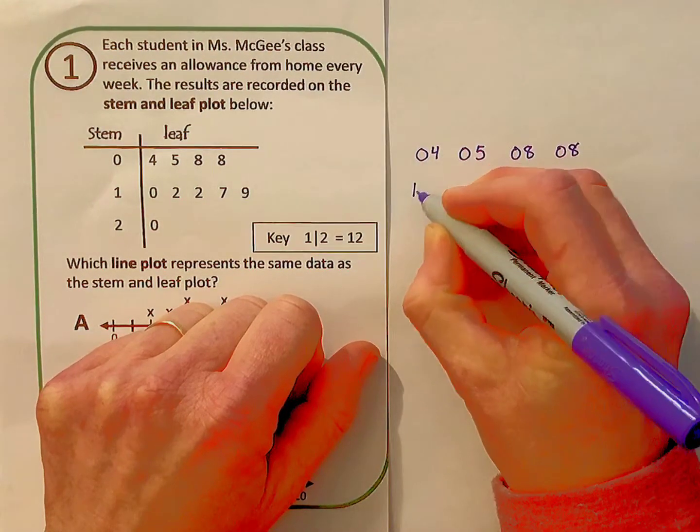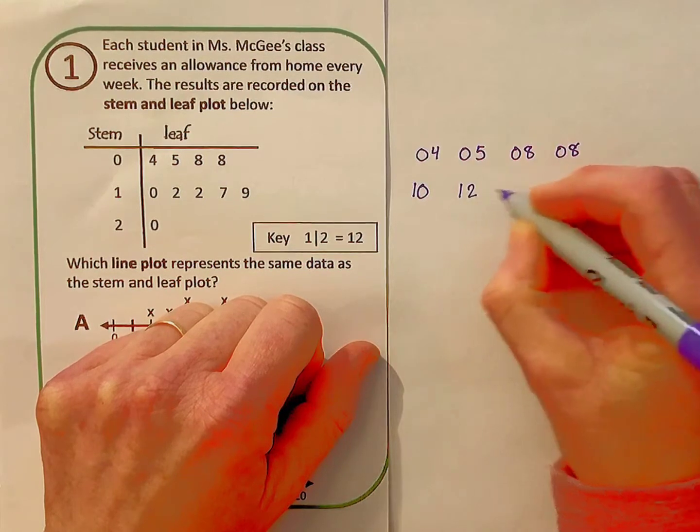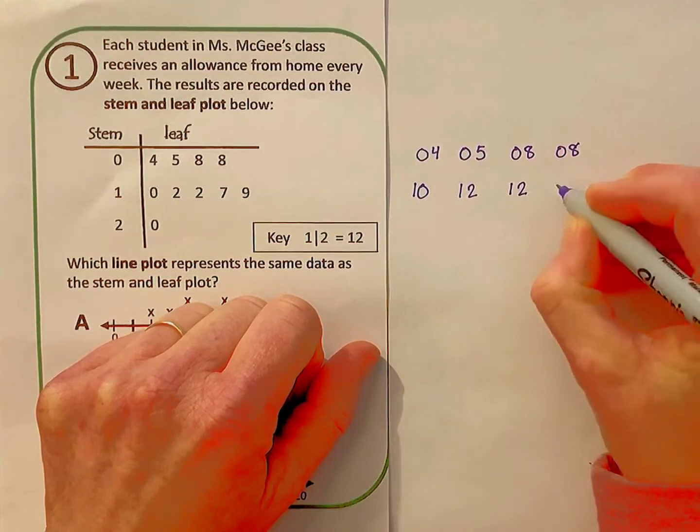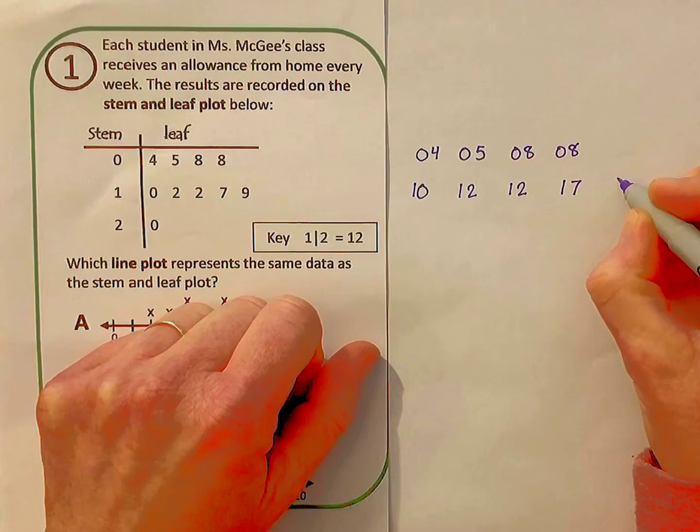The second row, the stem is 1 and I'll write these numbers down: 10, 12, 12, 17, and 19.